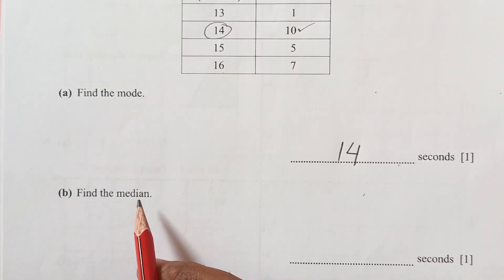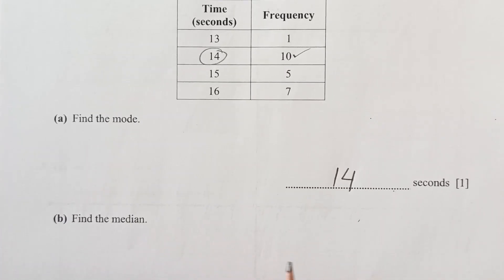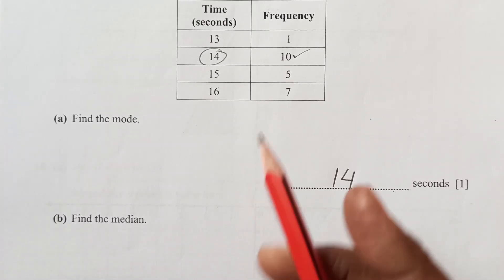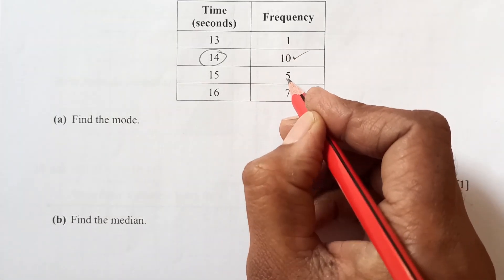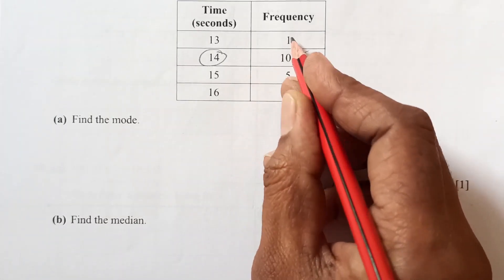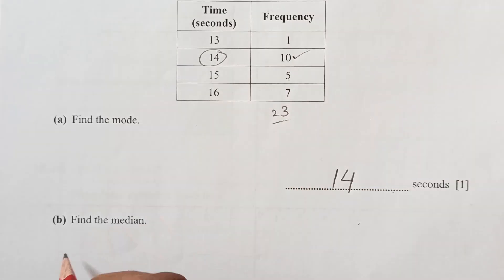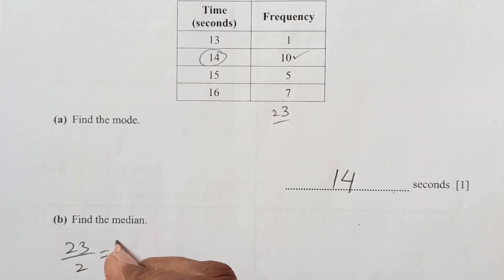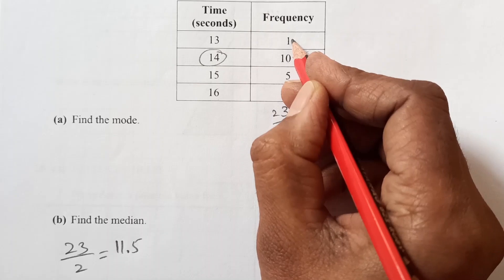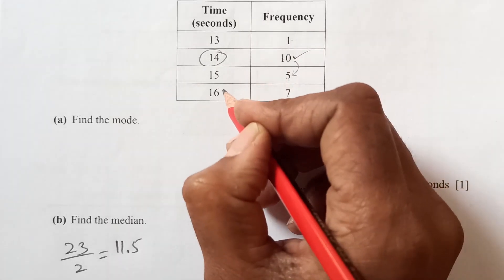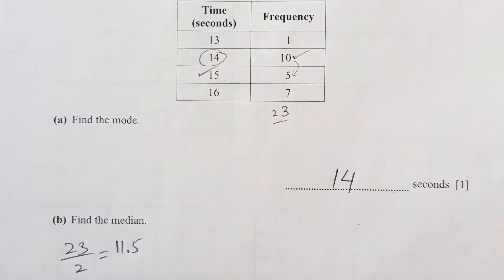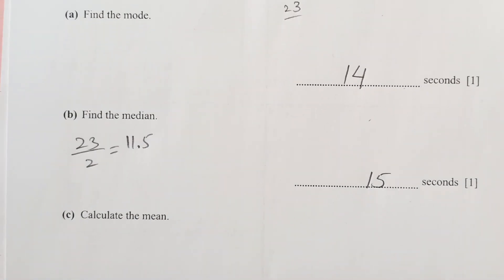Find the median. For the median, you are going to take half of the frequencies. Let's first add this: 1, 5, 7 plus 5 is 12, plus 10 is 13, then 23. So 23 over 2, that's going to be 11.5. Up to 10, 1, 10, 11. 11.5 will go to the next time. So that is going to be 15. So this is 15 seconds.